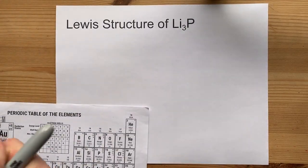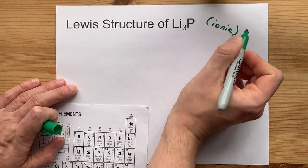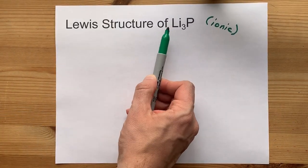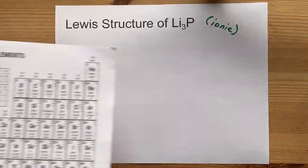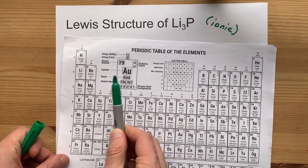When metals and non-metals combine, you get ionic compounds. That's the definition of an ionic compound, in fact, which means the metal is going to give away its electrons to fill the outer shell of the non-metal. Let's see how that works.